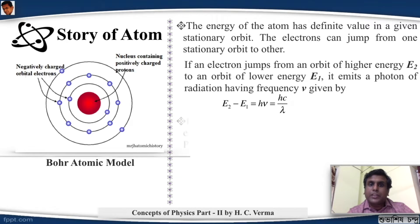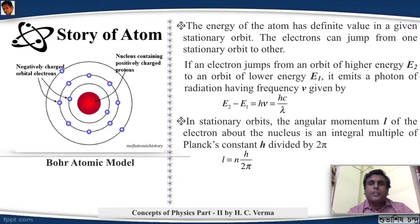In the stationary orbits, the angular momentum of the electron about the nucleus is always integral multiple of Planck's constant divided by 2 pi, i.e. h cross, i.e. the angular momentum is quantized. This is called the Bohr's quantization rule.